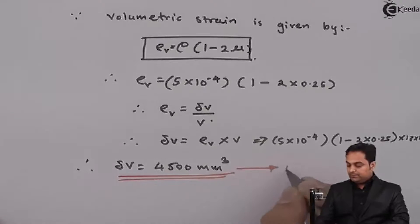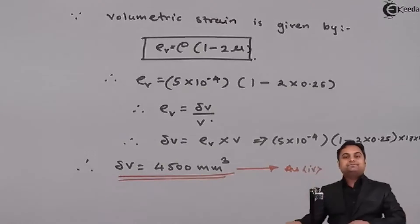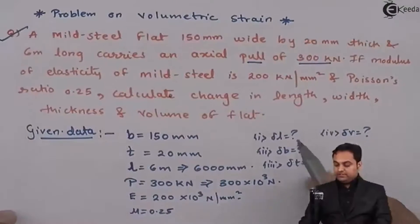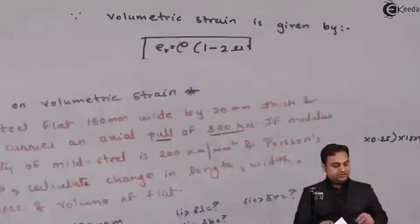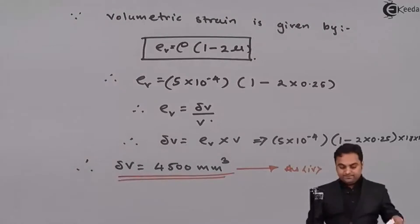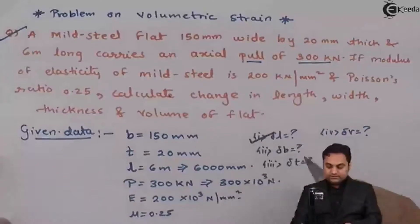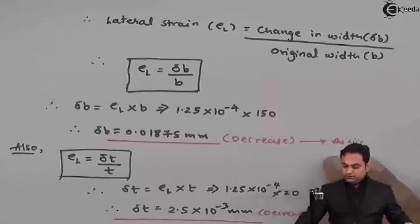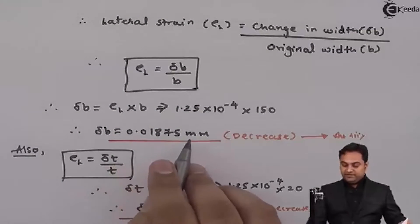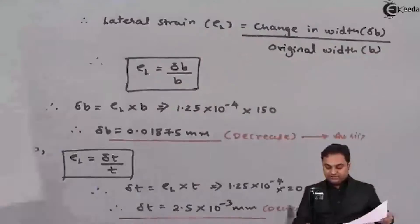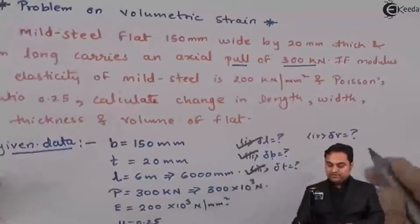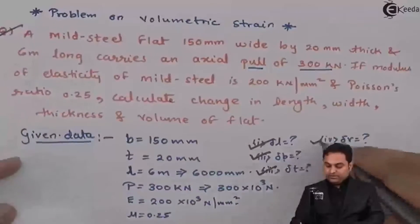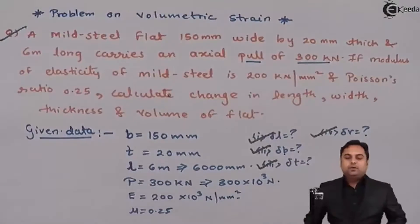So the change in volume is 4500 mm³, which is the fourth answer. To summarize: change in length = 3 mm, change in width = 0.01875 mm, change in thickness = 2.5 × 10⁻³ mm, change in volume = 4500 mm³. With all four values calculated, the problem is complete.